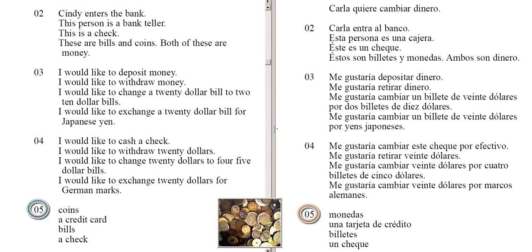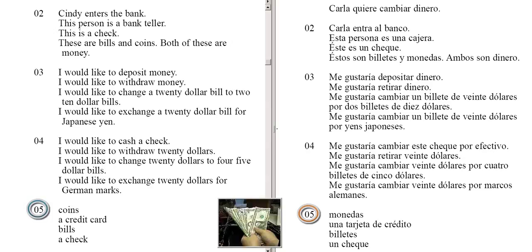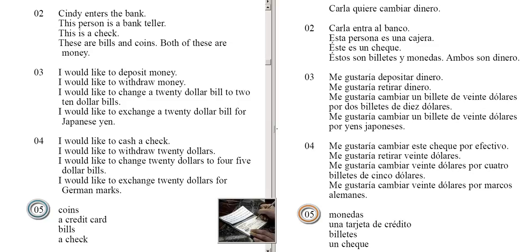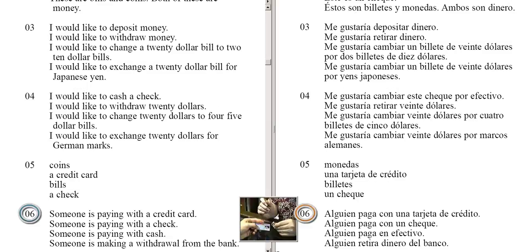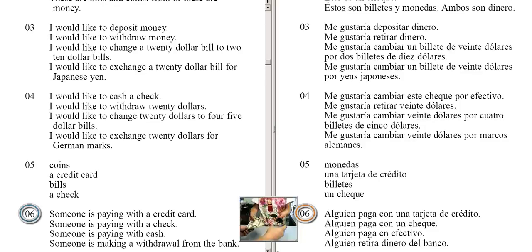Coins. A credit card. Bills. A check. Someone is paying with a credit card. Someone is paying with a check. Someone is paying with cash. Someone is making a withdrawal from the bank.